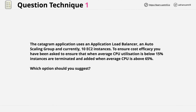So this is the question that we have. The catagram application uses an application load balancer, an auto scaling group, and currently 10 EC2 instances. To ensure cost efficacy, you have been asked to ensure that when average CPU utilisation is below 15%, instances are terminated, and added when average CPU is above 65%. Which option should you suggest?